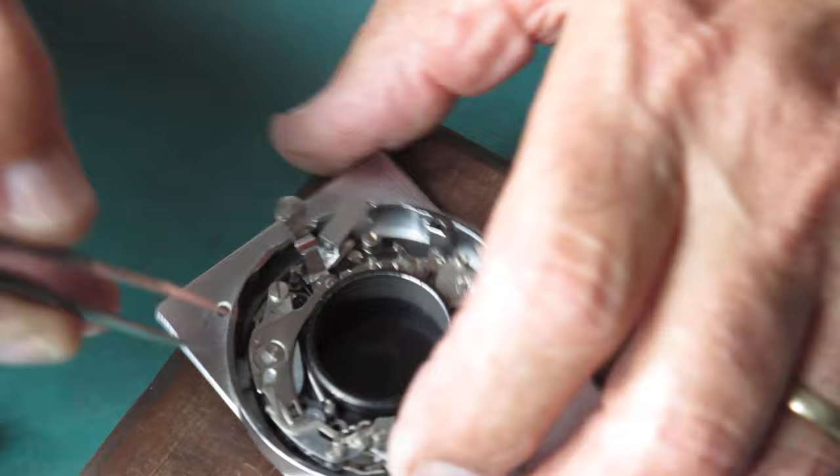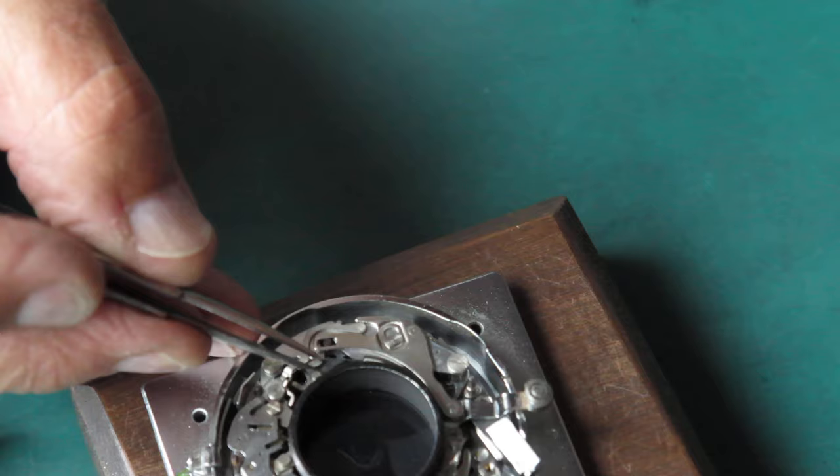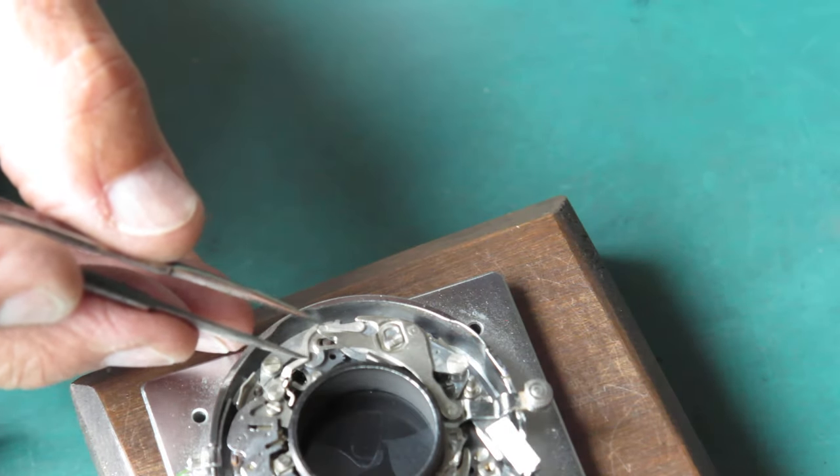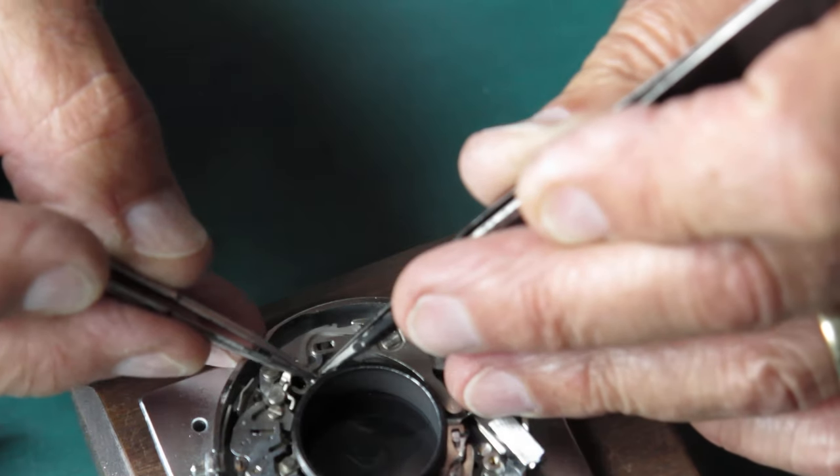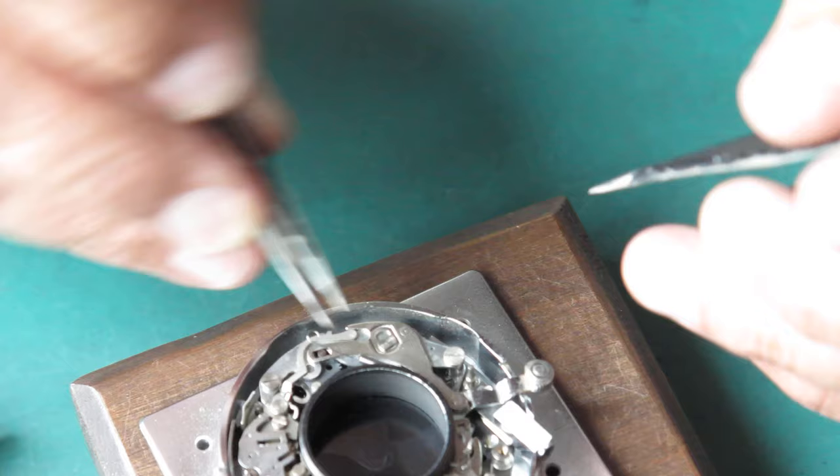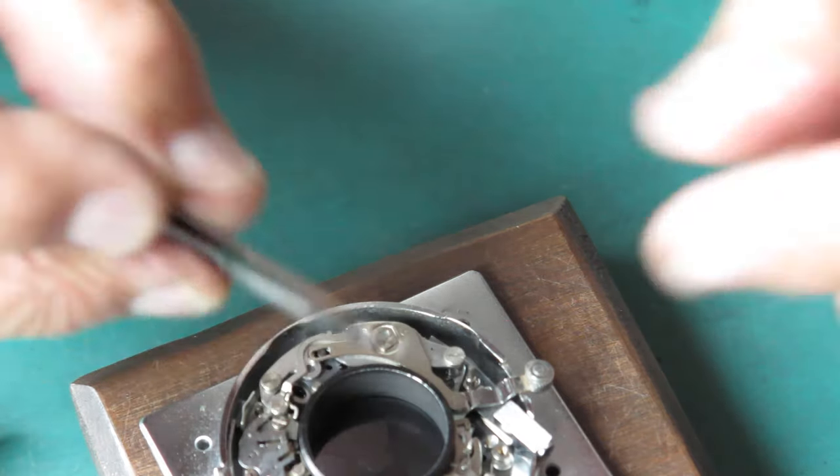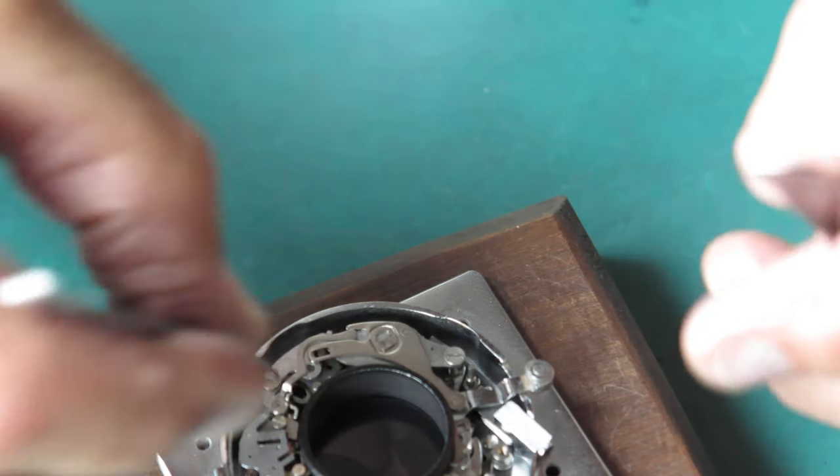This spring in this shutter, the Pronto SVS shutter, it's much the same shape as you'll see on the self-timer of a Pronto shutter. But it's a different weight of spring. This is a much finer spring. It's not as strong as the one on the Pronto shutter. It doesn't need to be.